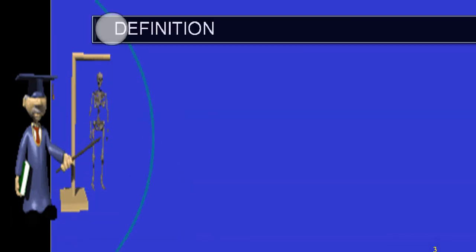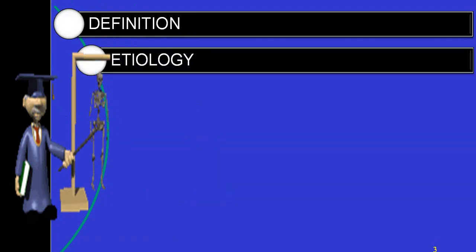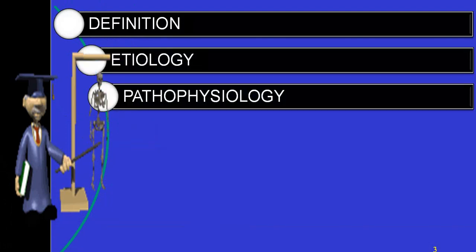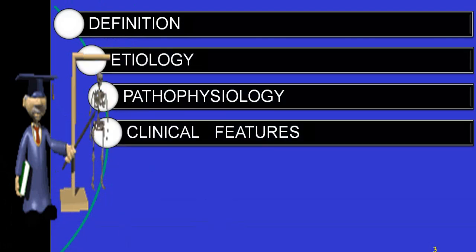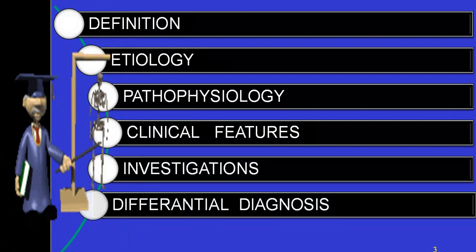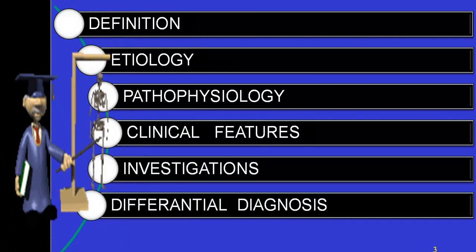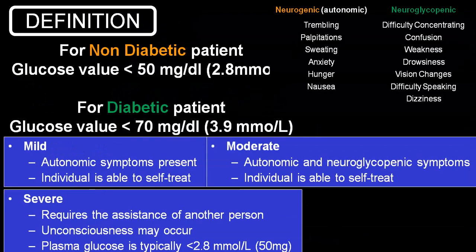We will be discussing under the headings of definition, etiology — what are the causes of hypoglycemia — then pathophysiology, what happens, clinical features, investigations, differential diagnosis, treatment, and complications.